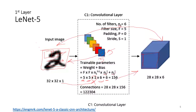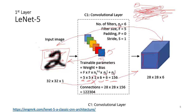The number of connections to the next layer is 28×28 multiplied by 156, because each of those should be a trainable item — and that comes out to roughly 122K connections.